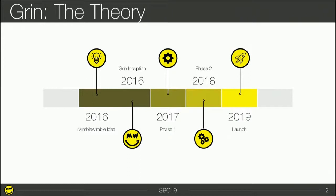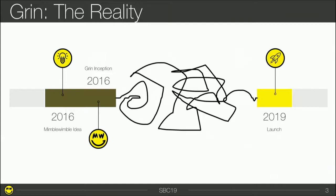When you think about a new cryptocurrency launch, you can have this nice timeline where you have the idea of MimbleWimble in 2016, the creation of Grin a few months later, some development phase, and then the launch. But in fact, it's much more like this — you have back and forth, design decisions to make, you do stuff, you reverse stuff too, and then you launch.